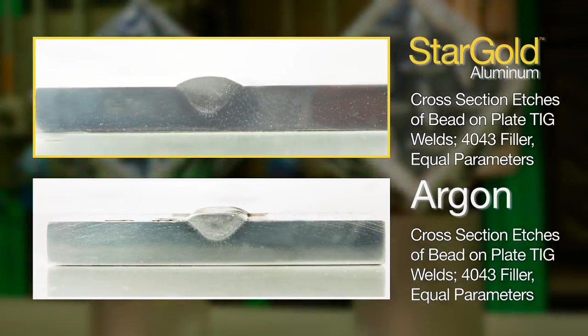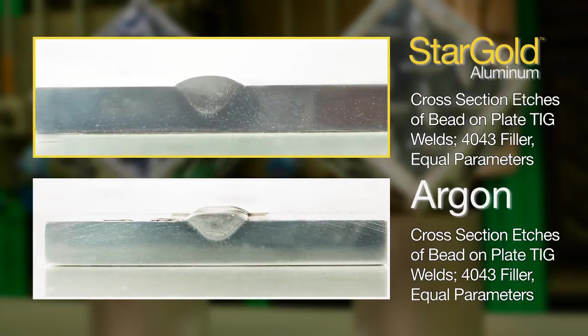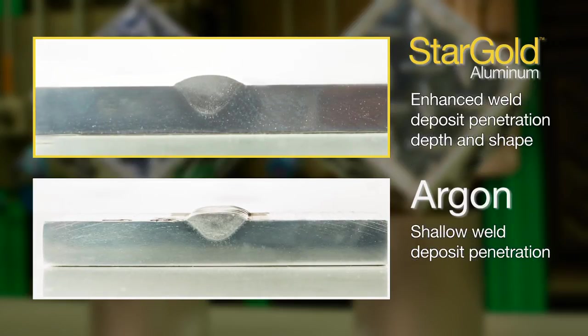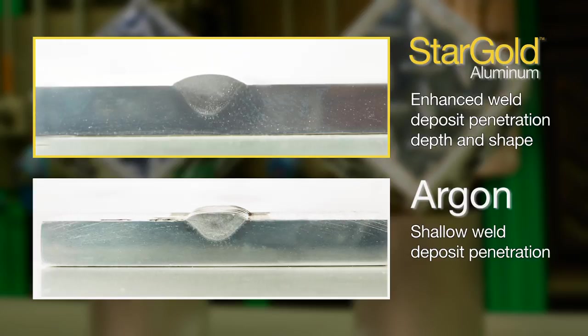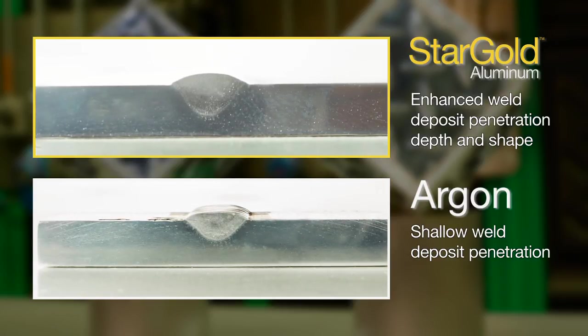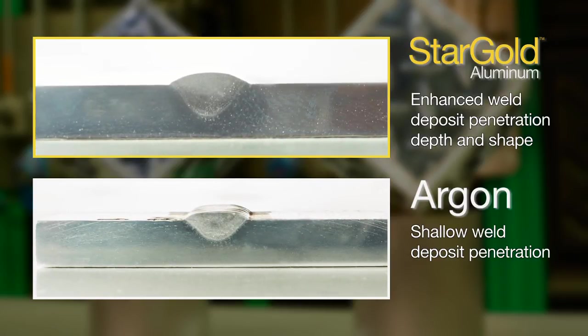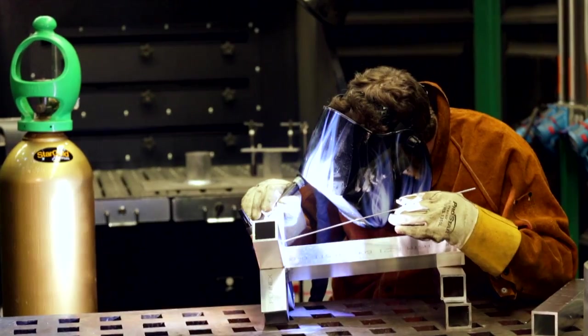Stargold Aluminum can provide increased arc energy and a higher electrode current density to improve penetration as seen in these weld cross sections. Weld deposit penetration, depth, and shape can be enhanced when using Stargold Aluminum.